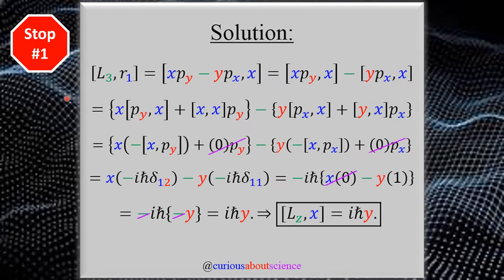The first stop naturally occurs with the first component of the position vector. As denoted here, we have L3 and R1, representing the third and first components respectively. Since the indices represent the component, L3 equals LZ, which from the cross product equals X·PY minus Y·PX. And the first component of R gives us X.